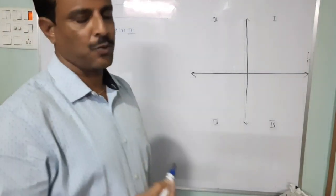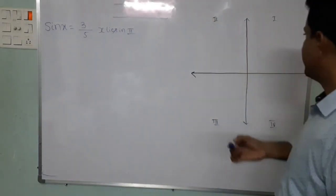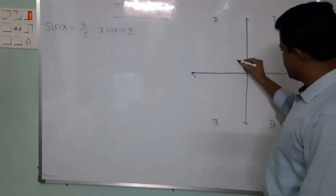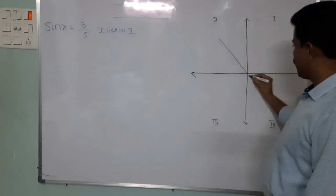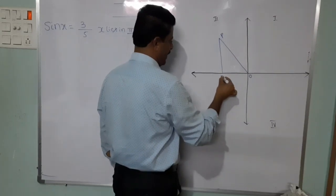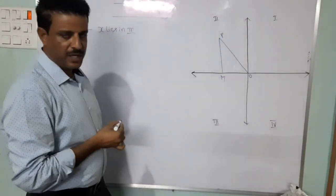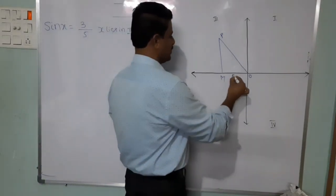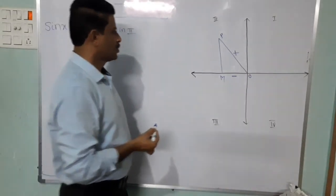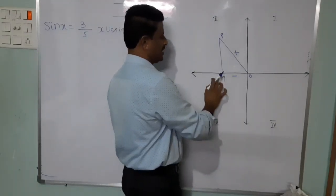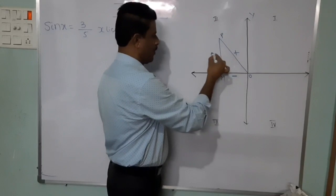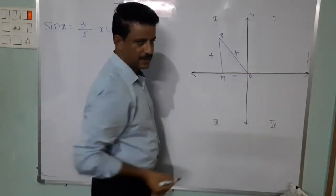Since the quadrant is the second quadrant, draw a right-angled triangle in the second quadrant. Give the triangle the name OPM, and draw PM perpendicular to the x-axis. Now denote the signs: OM is minus because it lies along the negative x-axis. OP, the revolving line, is always plus. PM is plus because PM is parallel to the Oy axis, which is positive.